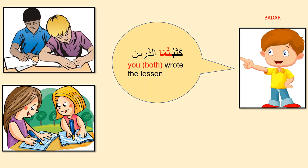Next: 'you both wrote.' Here we can see the dual form — two boys and two girls. How to say 'you both wrote the lesson' in Arabic? Katab-tuma at-darsa. Tuma is the attached pronoun or dhamairul muttasila, used for the dual form, second person, male and female. We already learned that the dual form is used for male and female the same. So we use katab-tuma for both two males and two females.